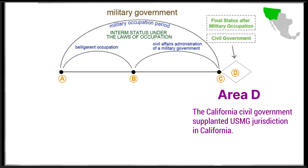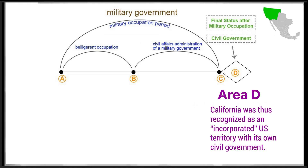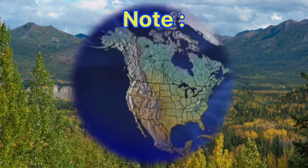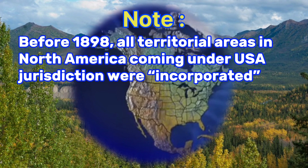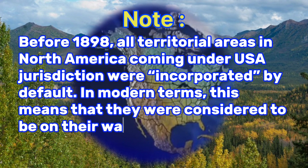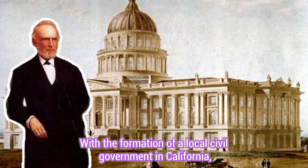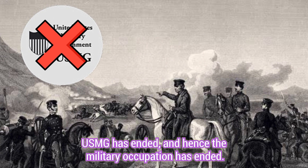Area D: The California Civil Government supplanted USMG jurisdiction in California. California was thus recognized as an incorporated U.S. territory with its own civil government. Note: before 1898, all territorial areas in North America coming under USA jurisdiction were incorporated by default. In modern terms, this means that they were considered to be on their way to statehood. With the formation of a local civil government in California, USMG has ended, and hence the military occupation has ended.